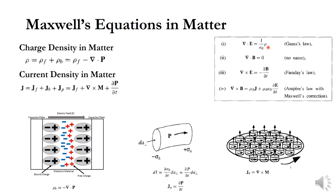The four Maxwell's equations are: Gauss's law — del dot E is equal to rho by epsilon 0; del dot B is equal to 0; del cross E is equal to minus dou B by dou T; and del cross B is equal to mu 0 J plus mu 0 epsilon 0 dou E by dou T. The RHS represents the source and the LHS represents the result.